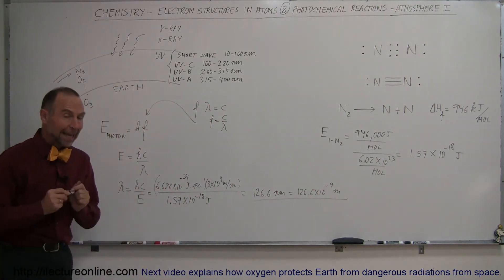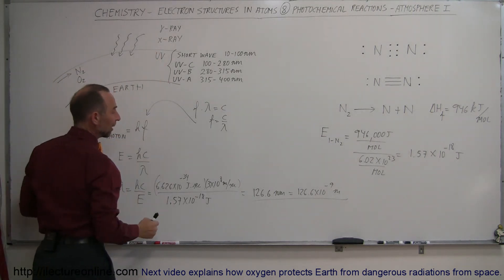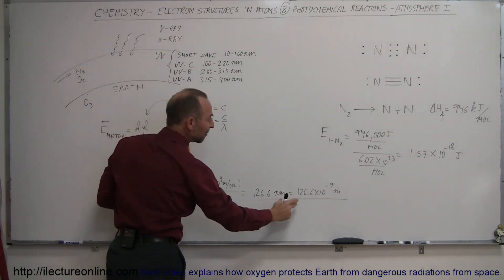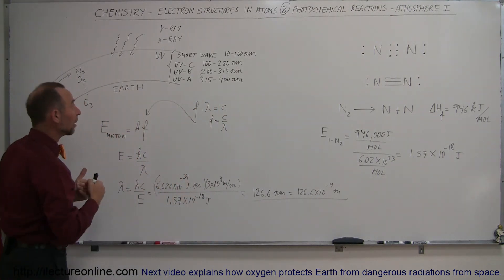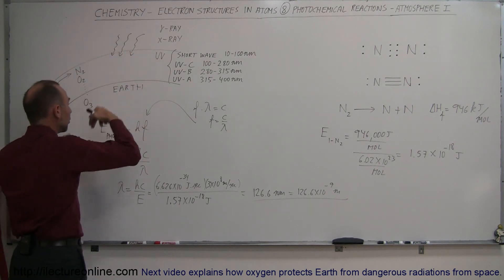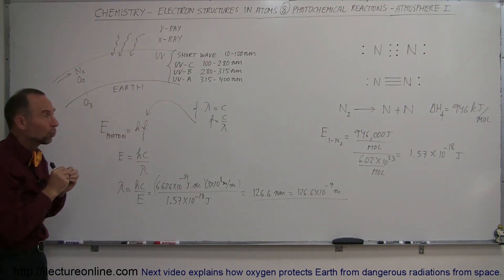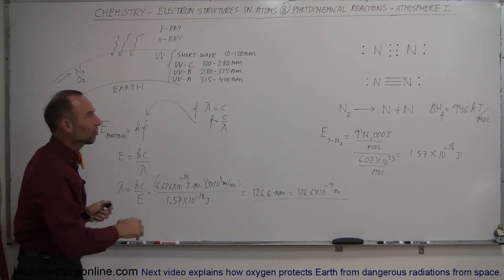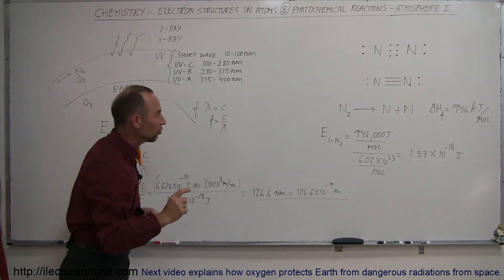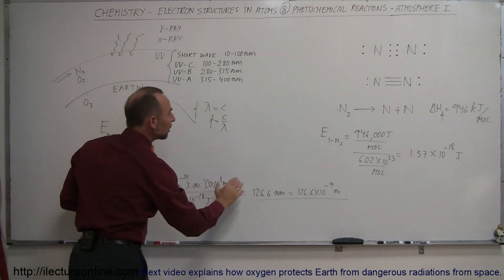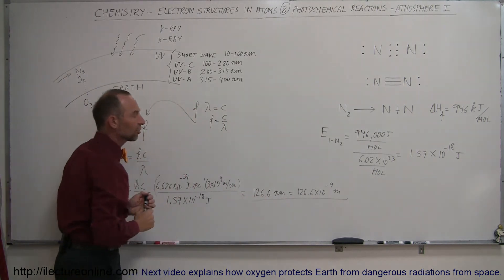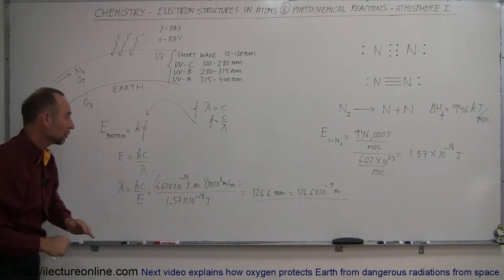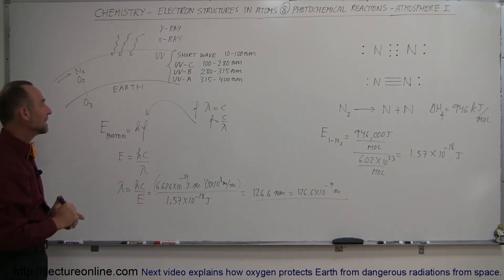Any photon coming into the atmosphere that has an energy or a wavelength of this many nanometers or shorter, that photon, when it hits nitrogen, will be absorbed, and the nitrogen atoms will dissociate and go off into the atmosphere as single atoms. The higher the energy of the photon, the more will be used to give them kinetic energy, but the minimum required to break it up is a 126.6 nanometer photon or an equivalent of 1.57 times 10 to the minus 18 joules.